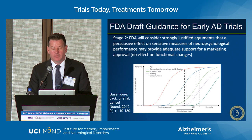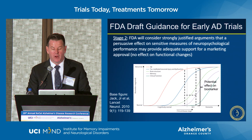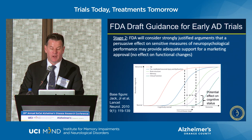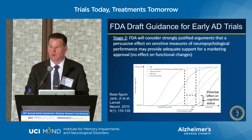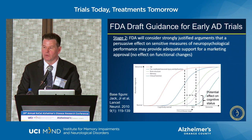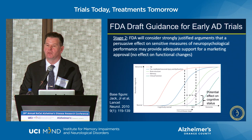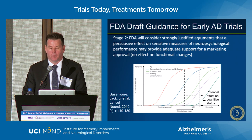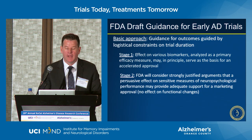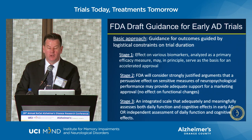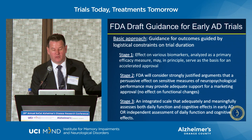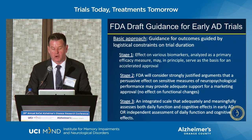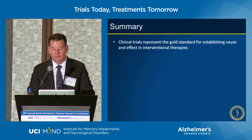For Stage 2, the FDA has given guidance to look at the biomarker but also at some change in cognitive status — something detectable in a reasonably timed clinical trial. Stage 3 guidance says you need to be looking at both cognitive and some change in function, as well as the biomarker potentially. These are our challenges as we go forward.